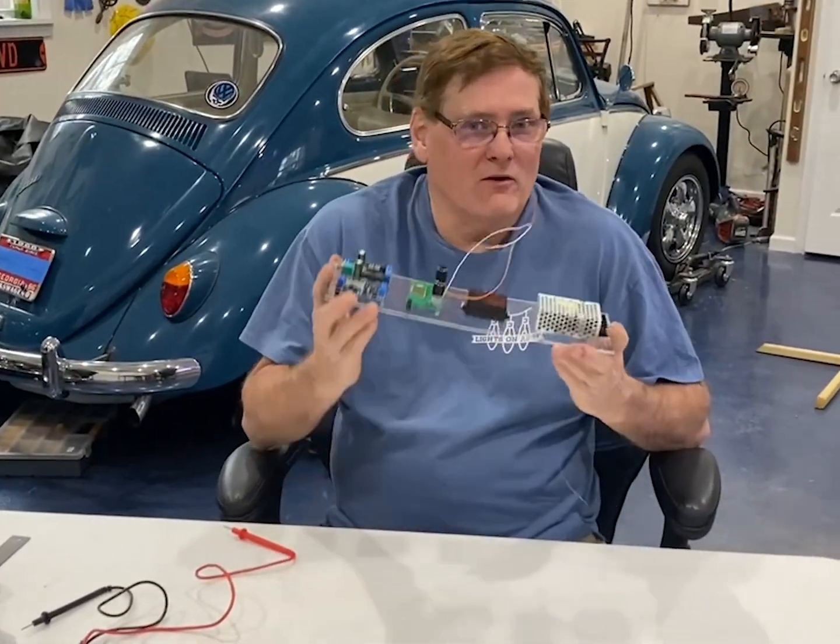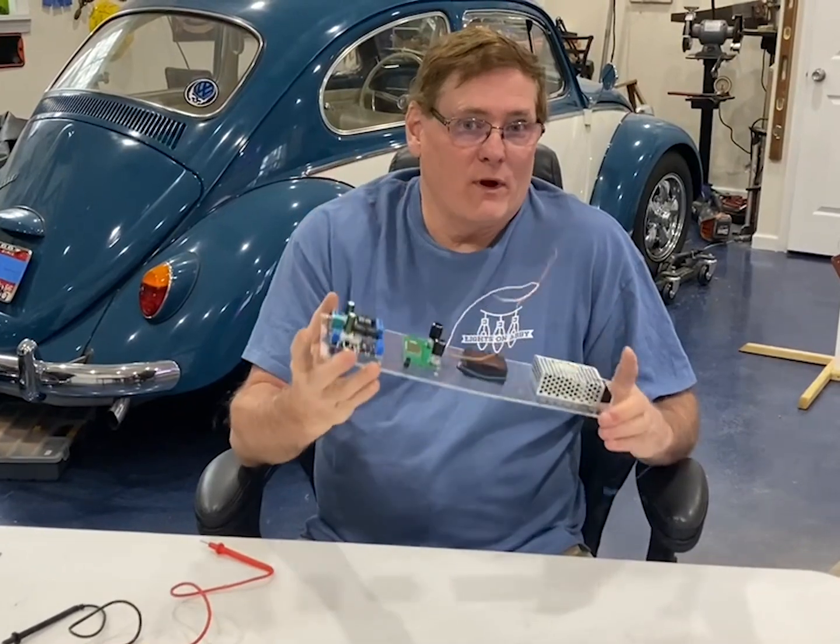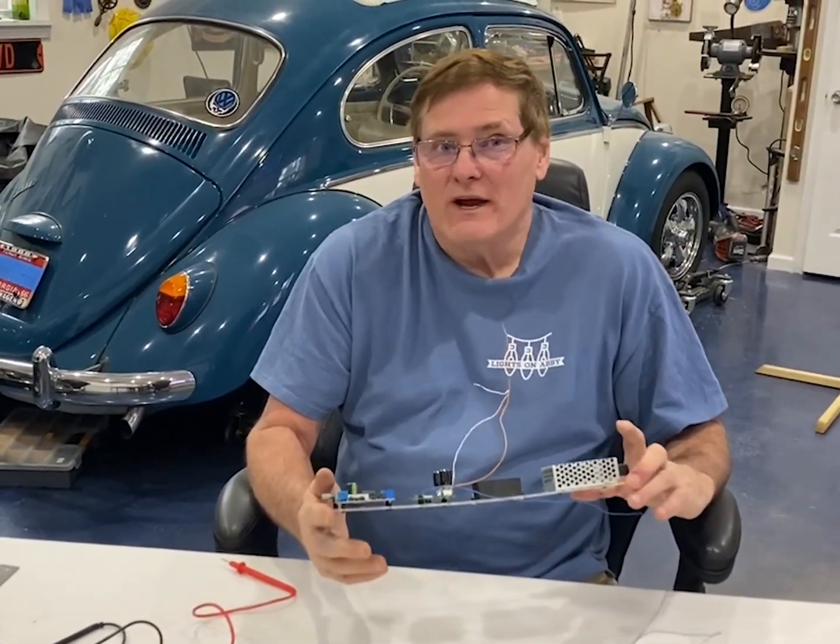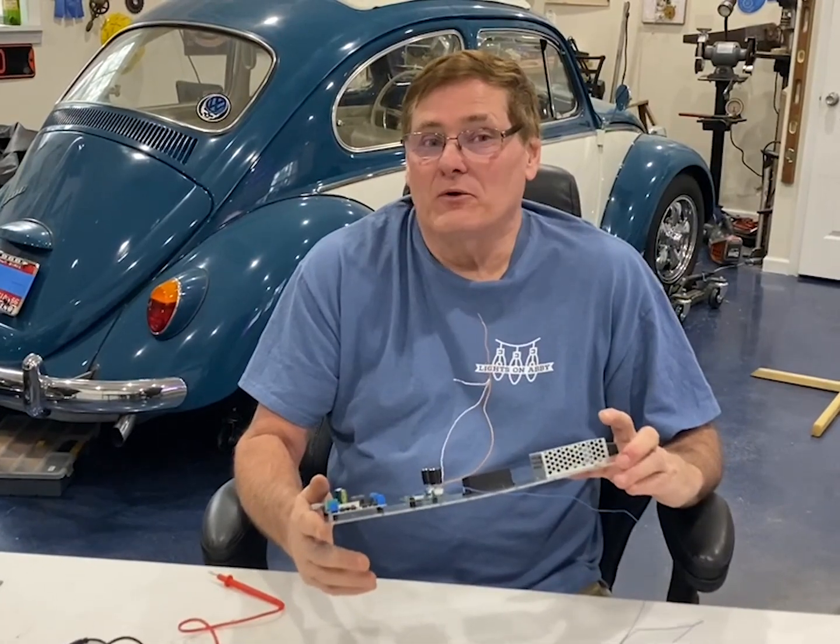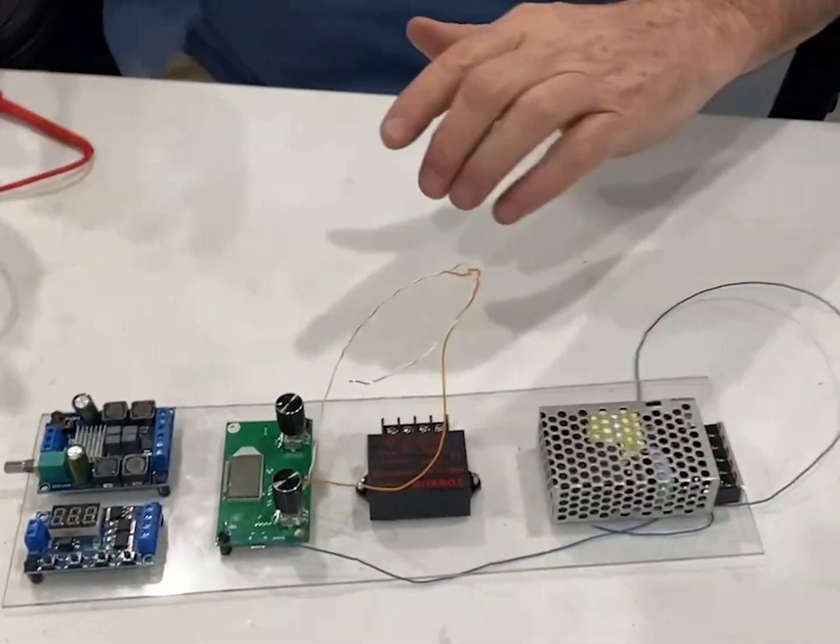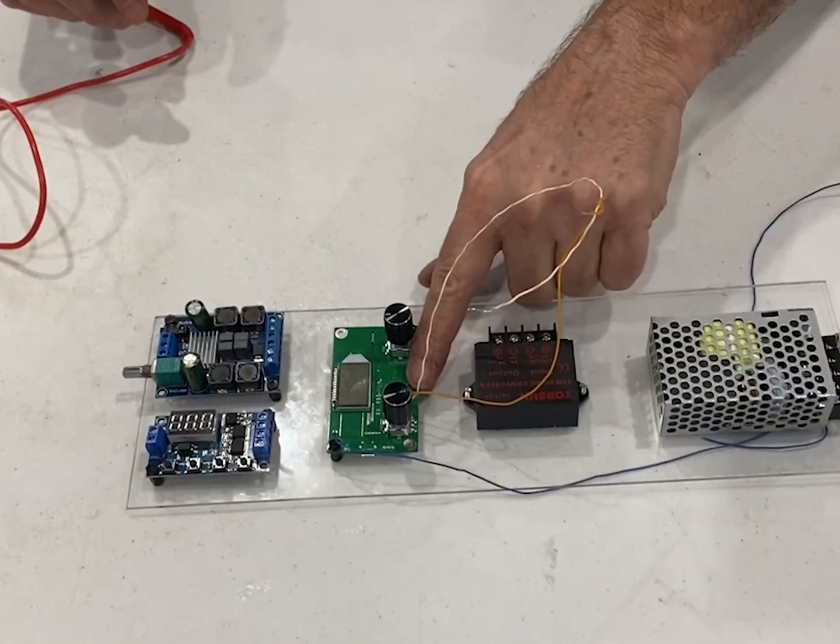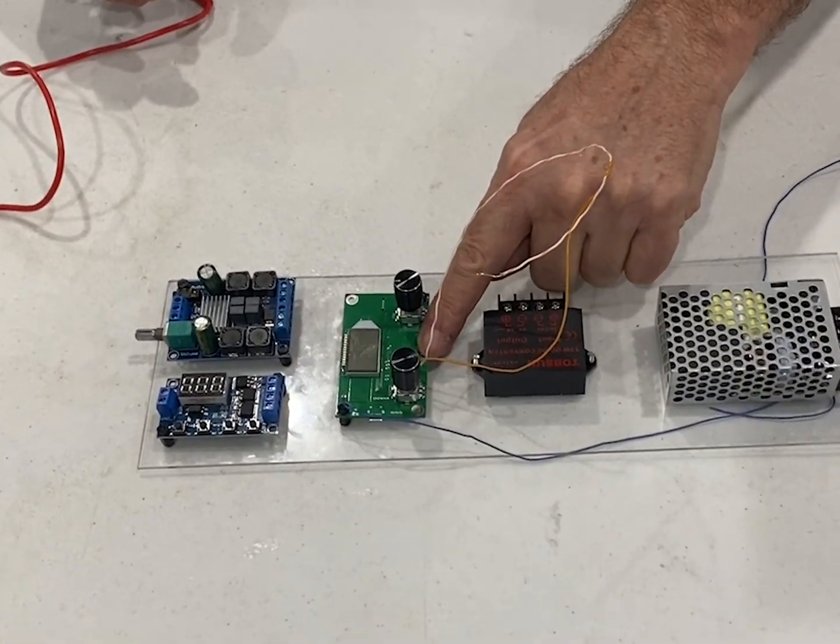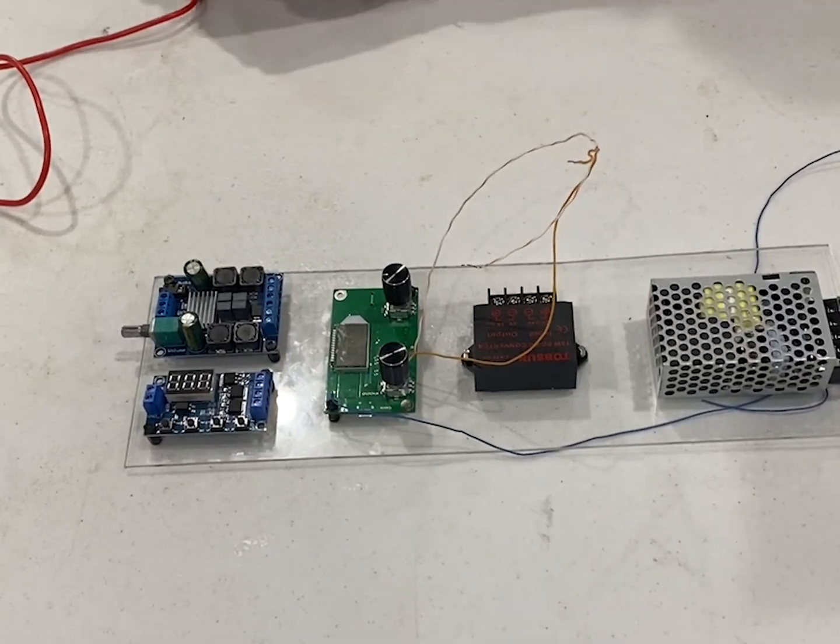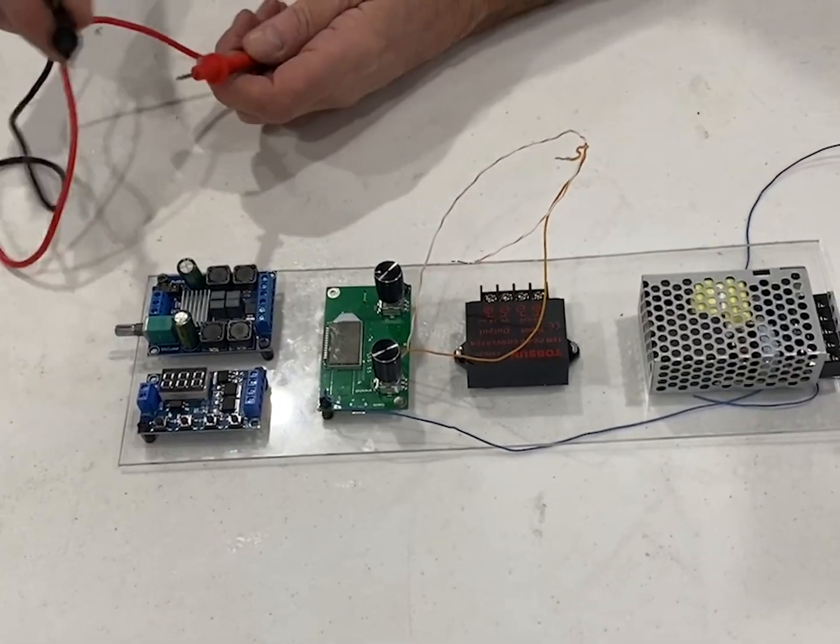With all the components mounted on the acrylic, we're now ready to start wiring up all of the boards. But I'd like to check and make sure that I did a good job soldering. To do that, I'm going to use a multimeter and check continuity on the two wires that I soldered onto the FM receiver. The positive and negative line and they should not have continuity.